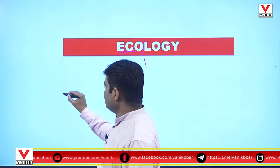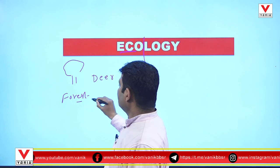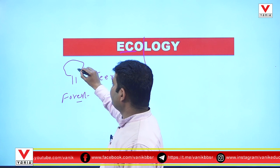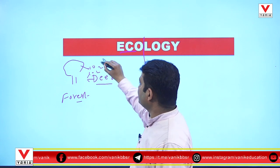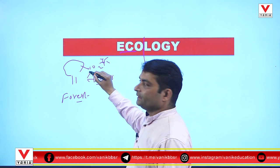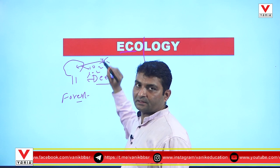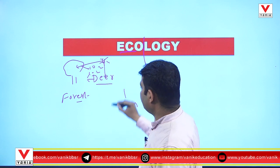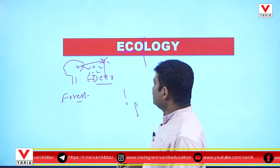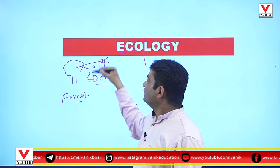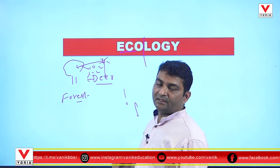Suppose this is a forest. Here one plant is there and here one deer is there. The deer releases carbon dioxide, which is utilized by the plant in the process of photosynthesis, and the plant releases oxygen, which is used by the deer for respiration. Sunray falls on the plant for photosynthesis, and sunlight also falls on the deer, which requires sunlight for the synthesis of vitamin D. So, the interrelationship of living organisms with their environment is called Ecology — this is the definition of Ecology.